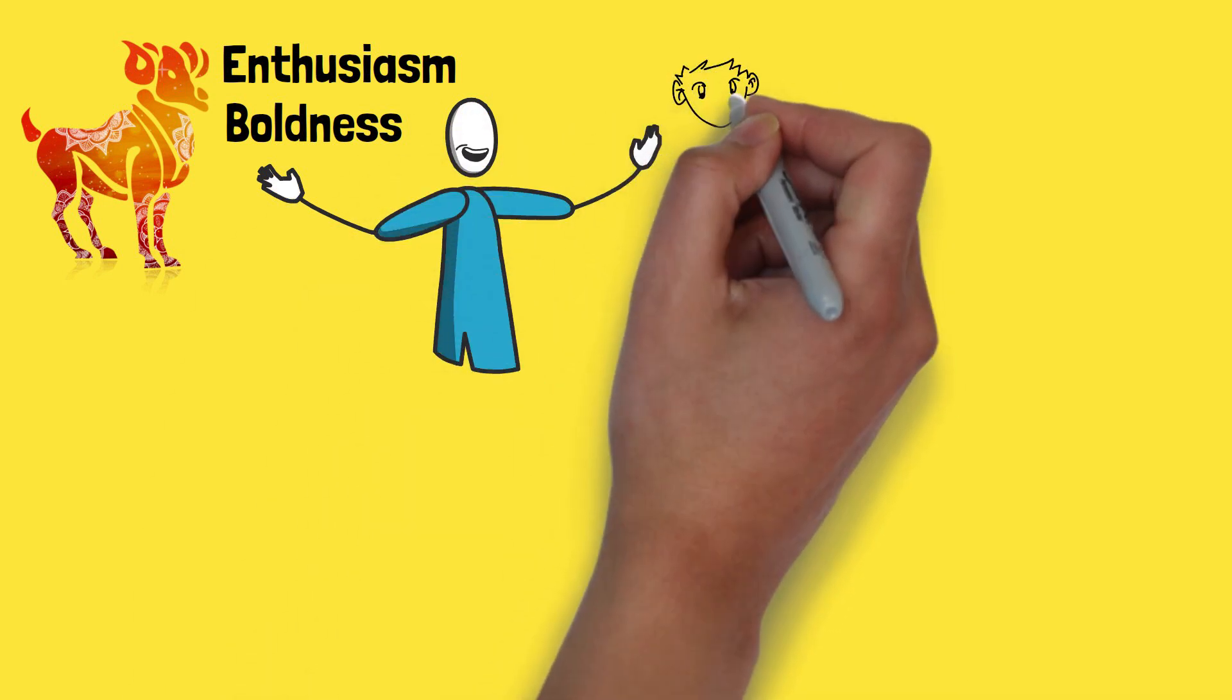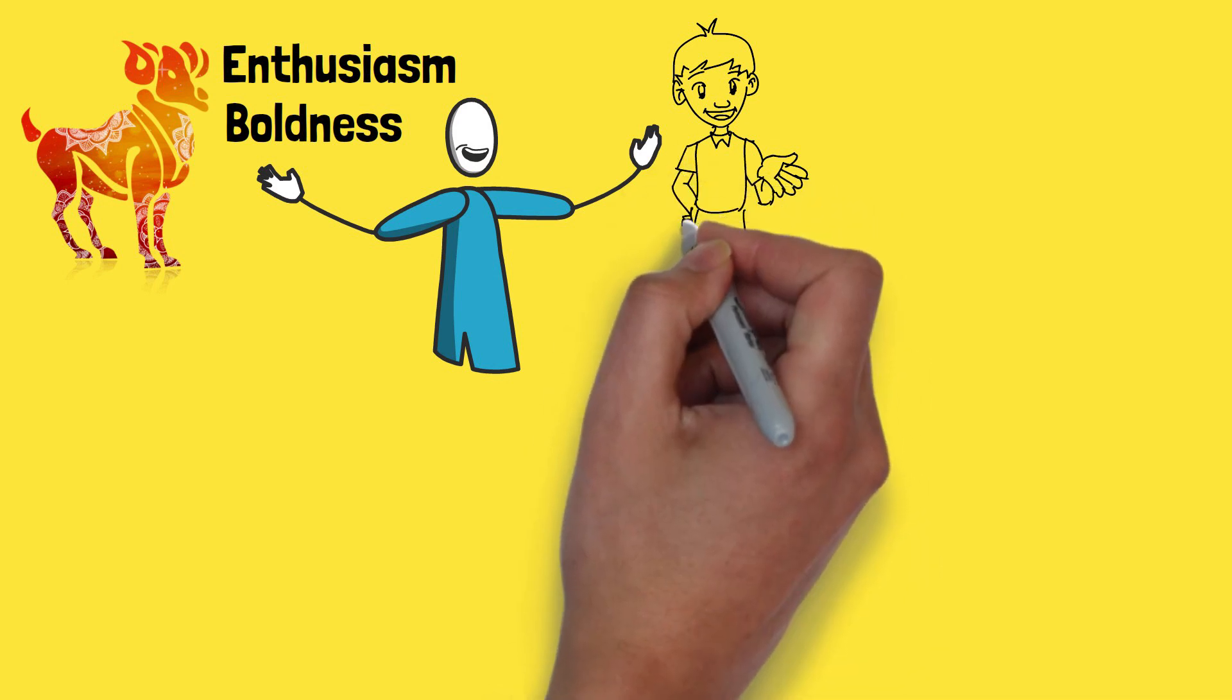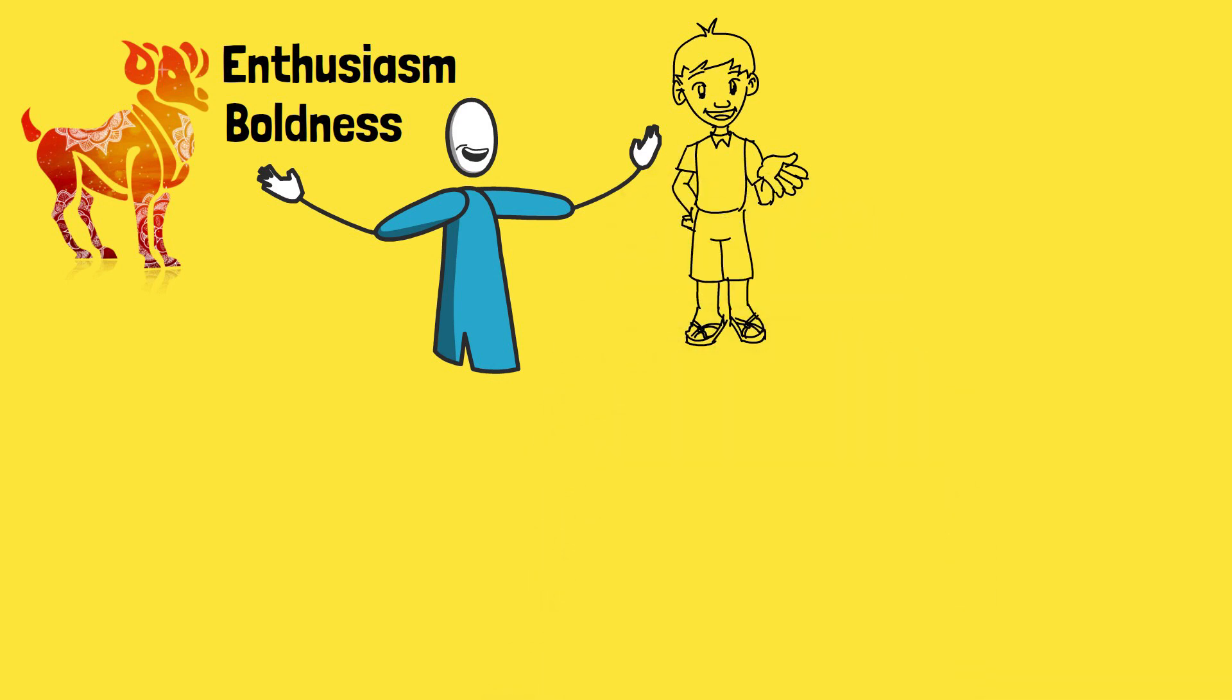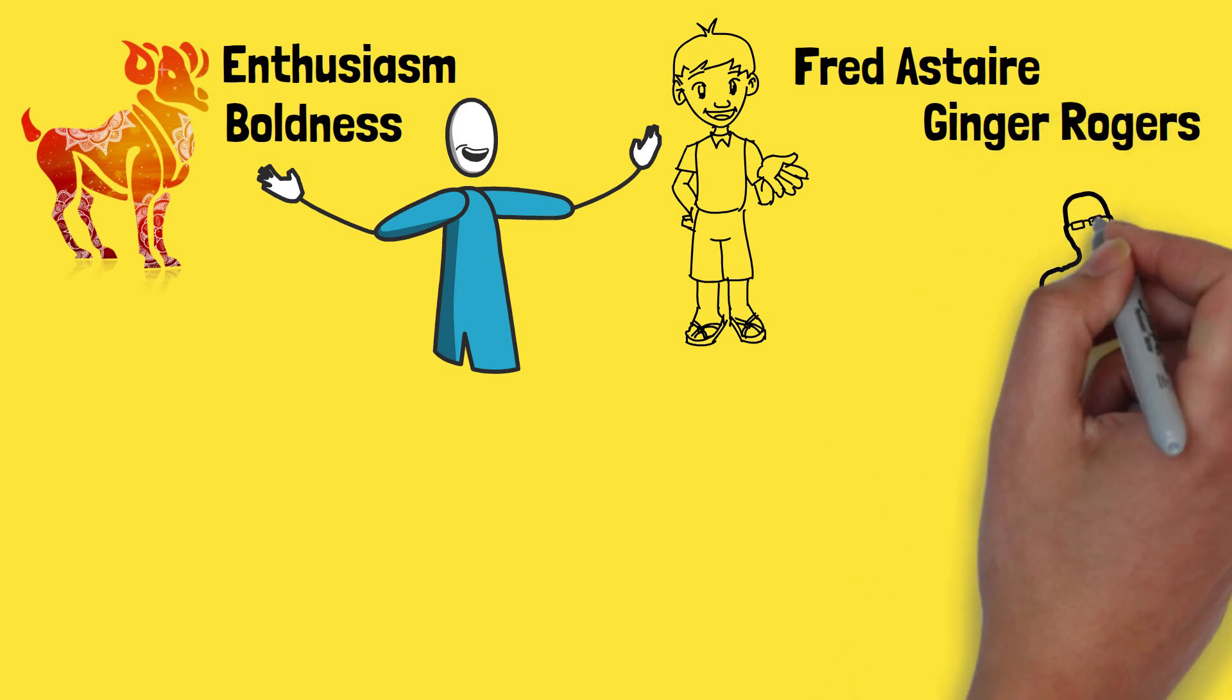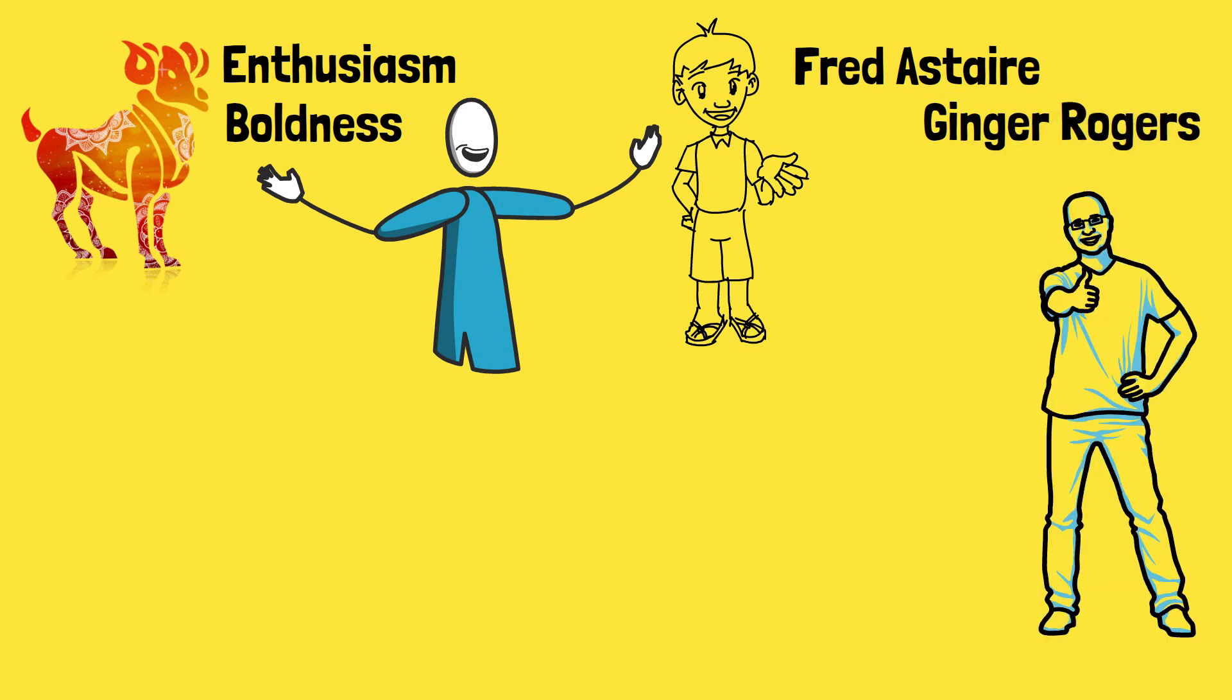Aries brings the moves, and Virgo ensures that everything is executed flawlessly. They're like the Fred Astaire and Ginger Rogers of the zodiac, with passion and precision in every step.